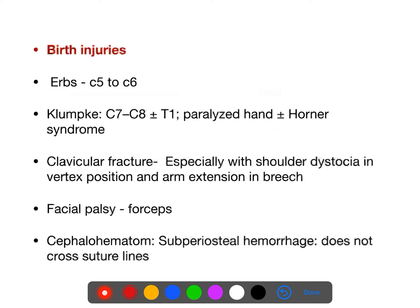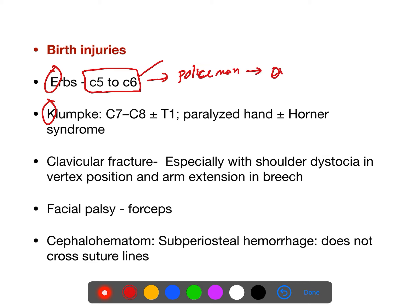Coming to Erb's palsy — E for early. Compared to Klumpke's, this is early. Damage to C5 to C6 nerve roots leads to Erb's palsy. This gives a policeman tip or policeman hand appearance. If you do overextension of the neck, it will cause Erb's palsy.